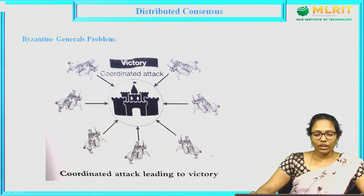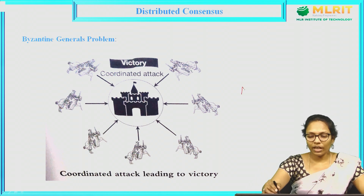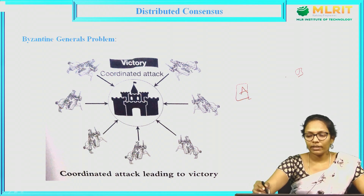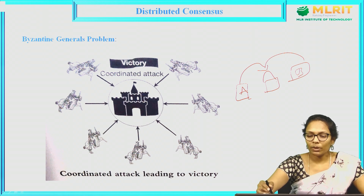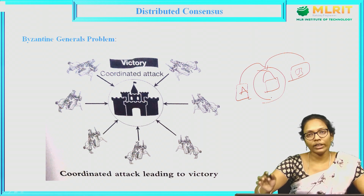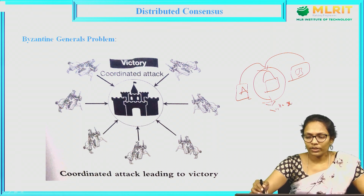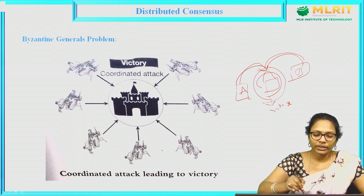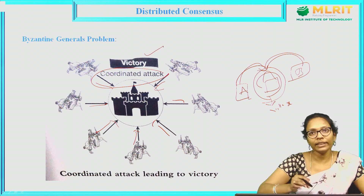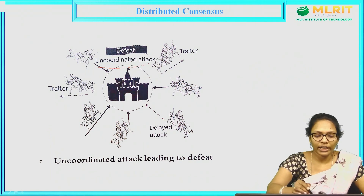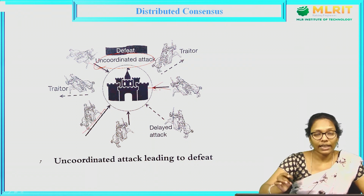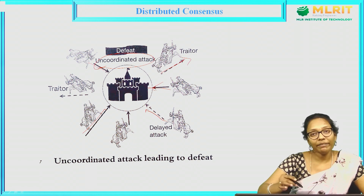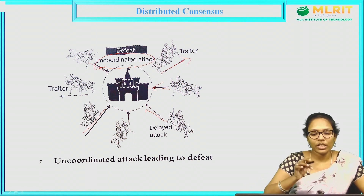This is a coordinated attack problem. The Byzantine General's problem involves two generals, A and B. A resides at one place and B resides at another place, with a village in the middle. Both generals need to communicate and attack on this village at the same time. If they coordinate among themselves and all the attackers attack at the same time, it is a coordinated attack and they will get victory. But if there is no coordination — uncoordinated attack — some attackers are attacking, some are traitors, and some are delayed attackers, and because of this miscommunication, it may lead to defeat.